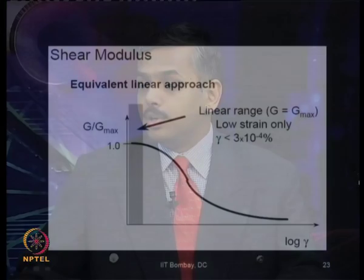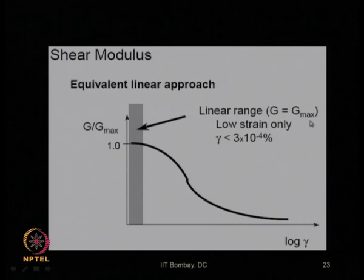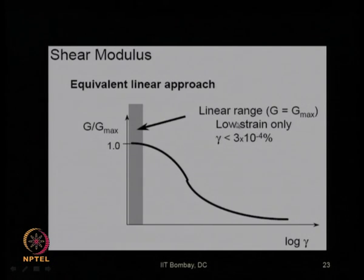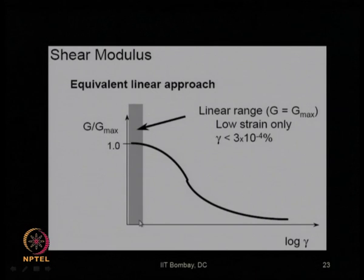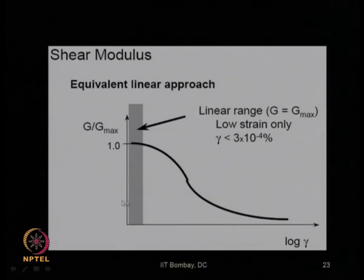For machine foundation design, where the permissible displacement is restricted, it is a low strain problem and G = G_max can be used. Otherwise, in earthquake engineering, linear analysis is never used because the material is at high strain range, and the shear modulus degradation must be considered accordingly.